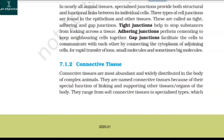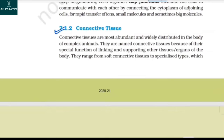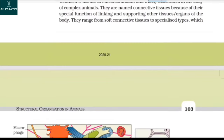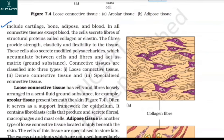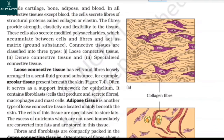7.1.2 Connective Tissue. Connective tissues are the most abundant and widely distributed in the body of complex animals. They are named connective tissues because of their special function of linking and supporting other tissues and organs. They range from soft connective tissues to specialized types including cartilage, bone, adipose, and blood. In all connective tissues except blood, the cells secrete fibers of structural proteins called collagen or elastin, which provide strength, elasticity, and flexibility. These cells also secrete modified polysaccharides that accumulate between cells and fibers and act as matrix or ground substance.